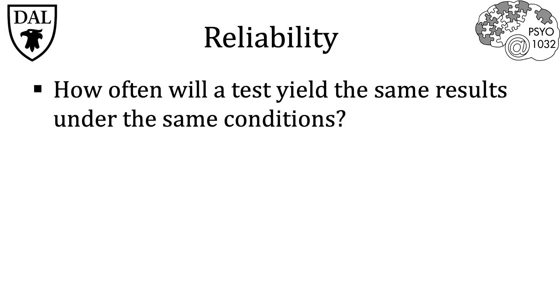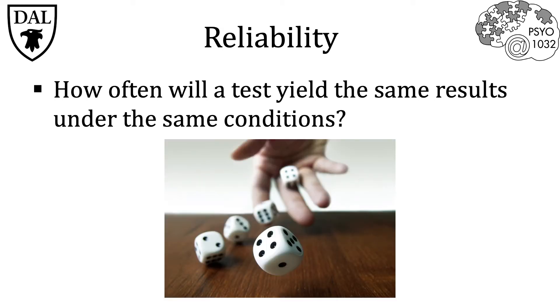The next measure that we use is reliability. Reliability addresses the consistency of the results — it asks how often will a test yield the same results under the same conditions. For example, the roll of a standard die will not have good reliability for getting the same number twice in a row; you'll only have a one in six chance of rolling any number twice in a row.